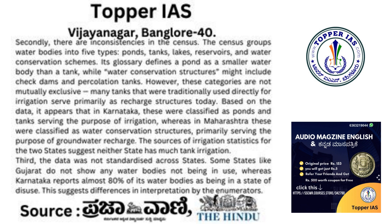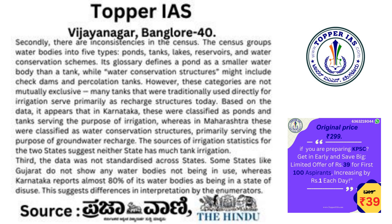Secondly, there are inconsistencies in the census. The census groups water bodies into five types: ponds, tanks, lakes, reservoirs, and water conservation schemes. Its glossary defines a pond as a smaller water body than a tank, while water conservation structures might include check dams and percolation tanks. However, these categories are not mutually exclusive. Many tanks traditionally used directly for irrigation serve primarily as recharge structures today. Based on the data, it appears that in Karnataka these were classified as ponds and tanks serving the purpose of irrigation, whereas in Maharashtra these were classified as water conservation structures primarily serving the purpose of groundwater recharge. The sources of irrigation statistics for the two states suggest neither state has much tank irrigation.